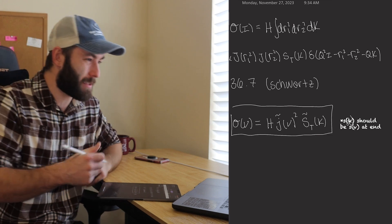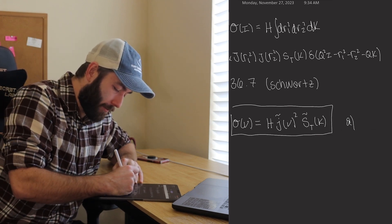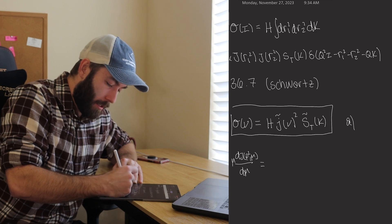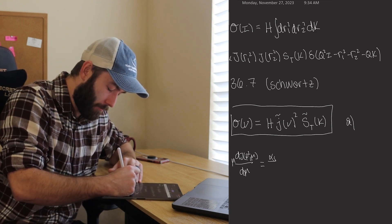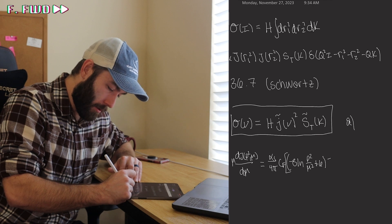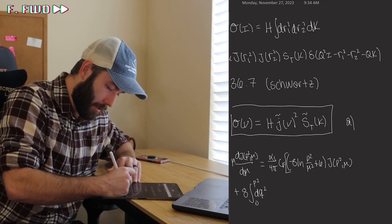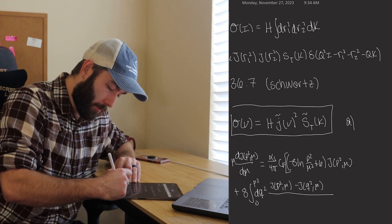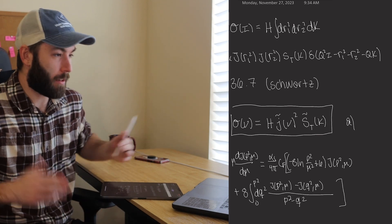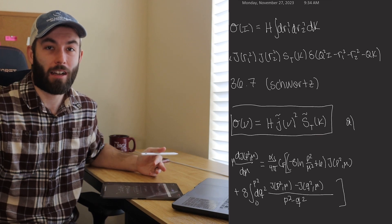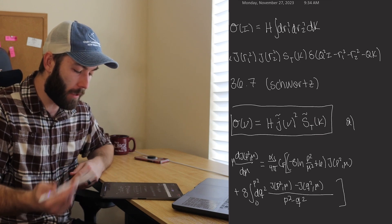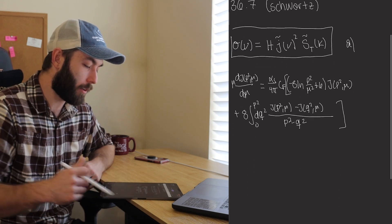Part B is to show how the renormalization group equations change in Laplace space. The RGE for the jet function in momentum space — mu dJ/d(mu) — is pretty complicated: it involves alpha_s, a color factor, and an integral over q squared with a kernel like 1/(p² − q²). This is the renormalization group equation for the jet function. It describes how the jet function evolves as you look at it at different scales — as your experiments take place at different energies — and it's non-local. It's an integral differential equation.